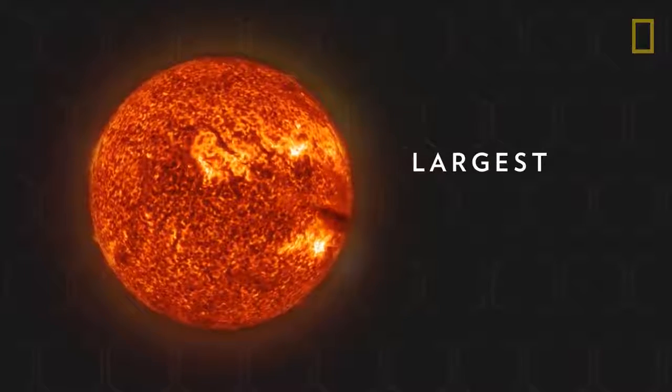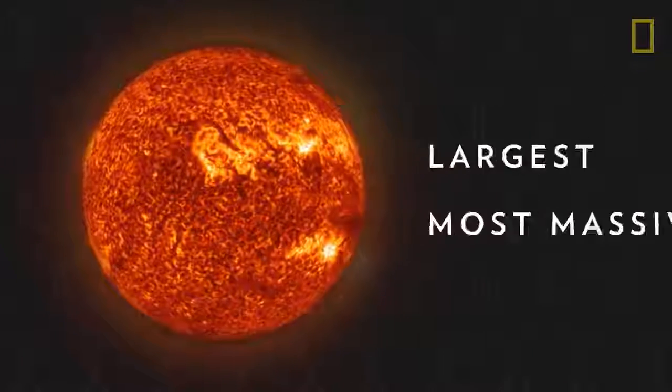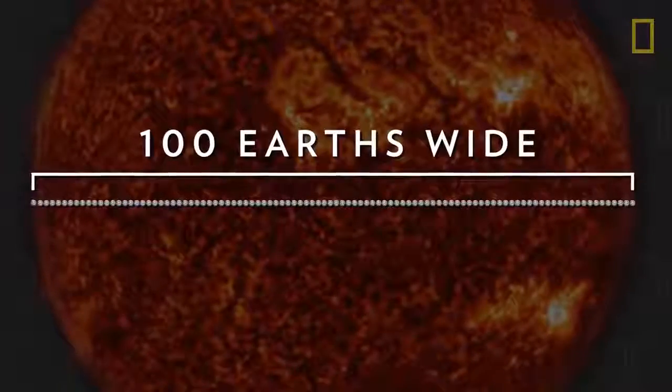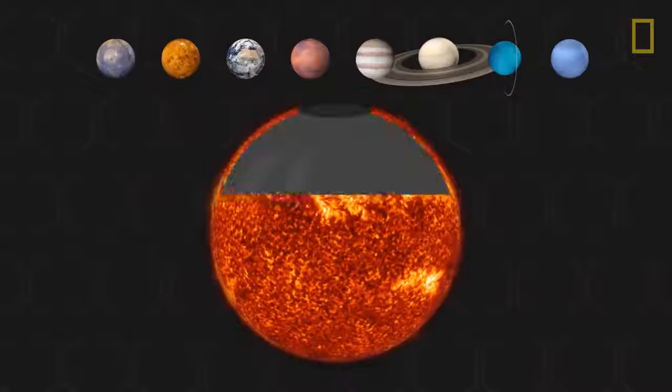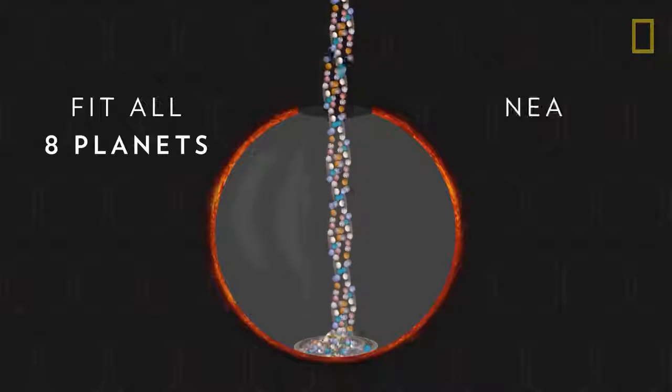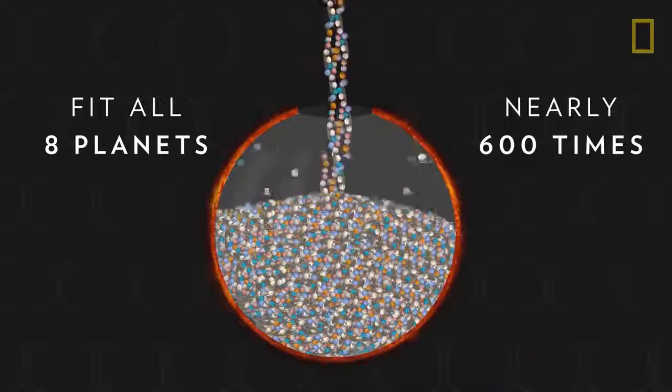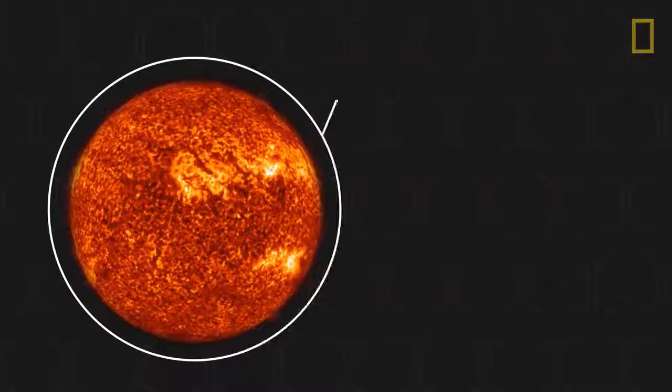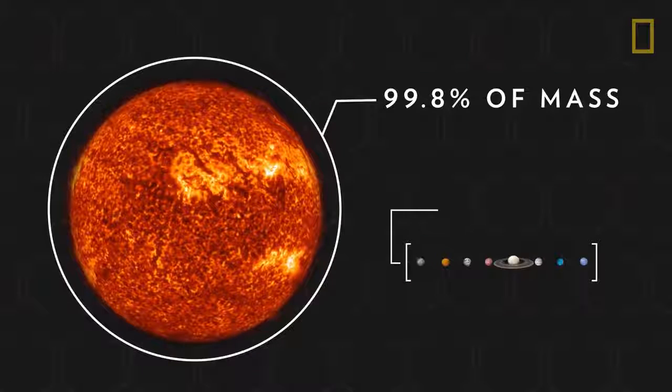Our Sun is the largest and most massive object in the solar system. It's more than 100 Earths wide and could theoretically fit all eight planets inside nearly 600 times. It also contains approximately 99.8% of all the mass in the solar system.